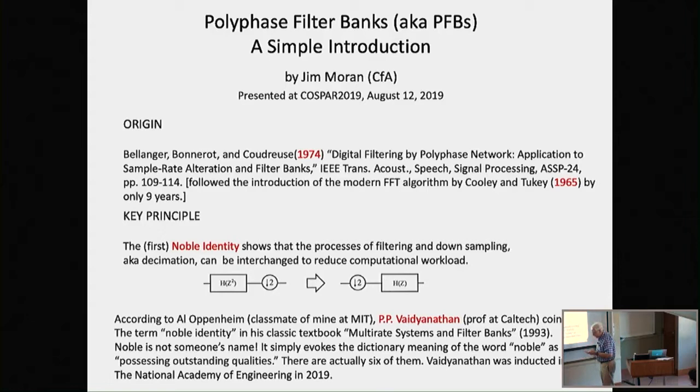The polyphase filter bank was invented by these very clever chaps led by Bellanger and his associates that wrote many papers in the mid-'70s, Digital Filtering by Polyphase Network Applications of Sample Rate Alteration and Filter Banks. That was 1974. This was only nine years after the famous Cooley-Tukey paper algorithm in 1965. So a lot happened in nine years. These are two seminal advances in signal processing.